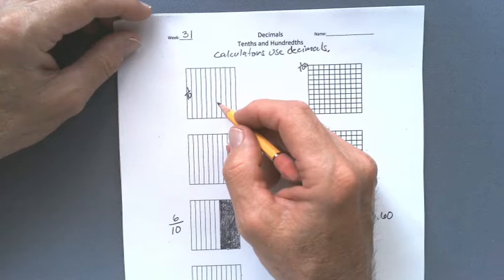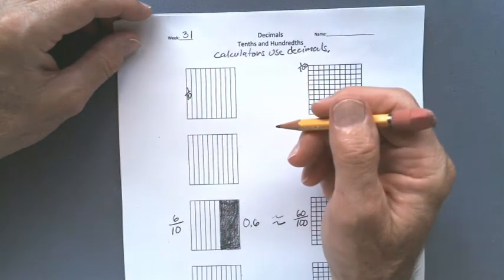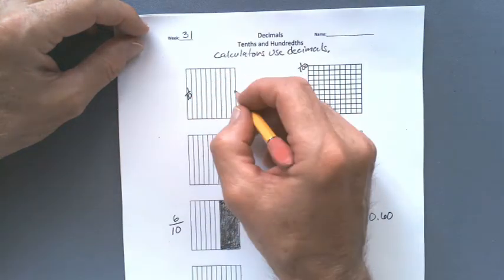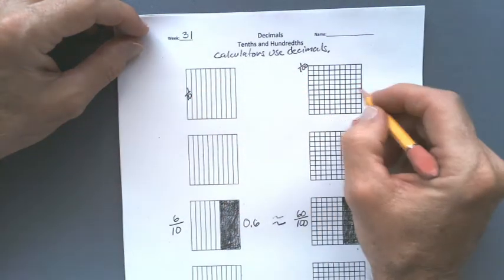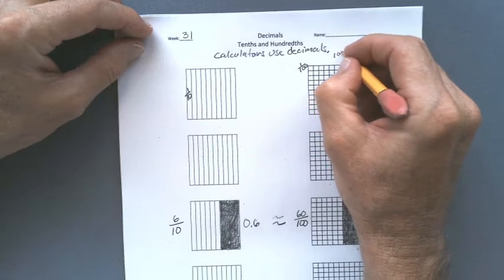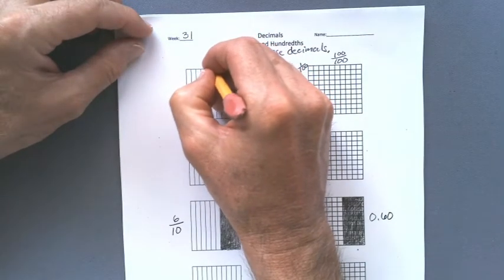So let's take this one. And let's say these are all tenths. And there's ten of them. So here's ten tenths. Here's a hundred hundredths. So a hundred hundredths would look like this. And ten tenths would look like this.